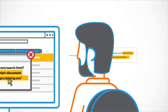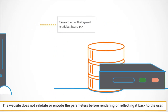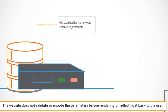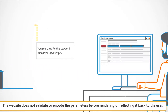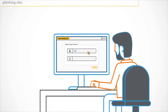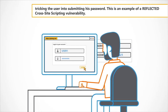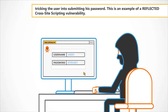The website does not validate or encode the parameters before rendering or reflecting it back to the user. The browser will execute the injected JavaScript and might redirect the user to a phishing site, tricking the user into submitting his password. This is an example of a reflected cross-site scripting vulnerability.